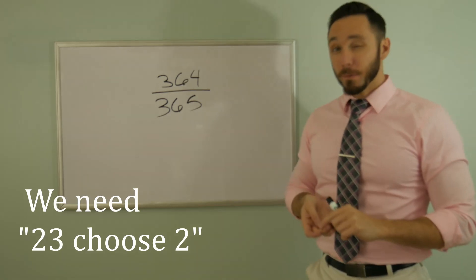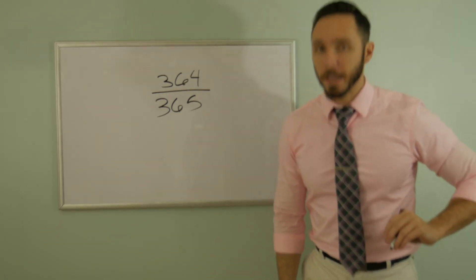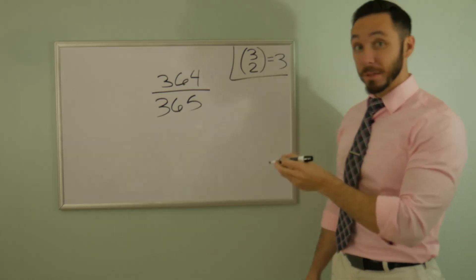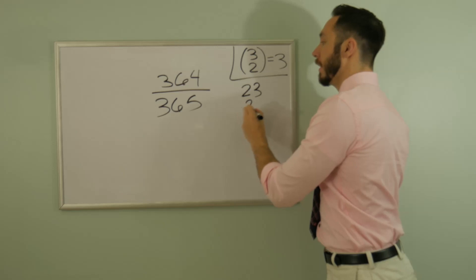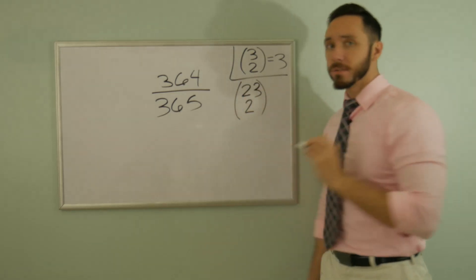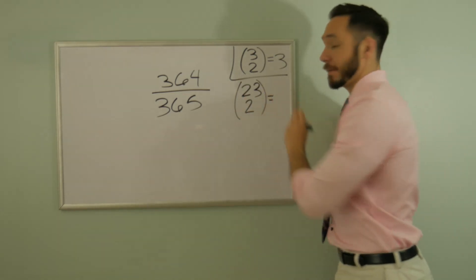Now, what about a room of 23? To that, I defer to my calculator. So what we're trying to do is 23 in total, choosing two. Of the 23 people, if you choose two, just two of them, how many different combinations can you have?